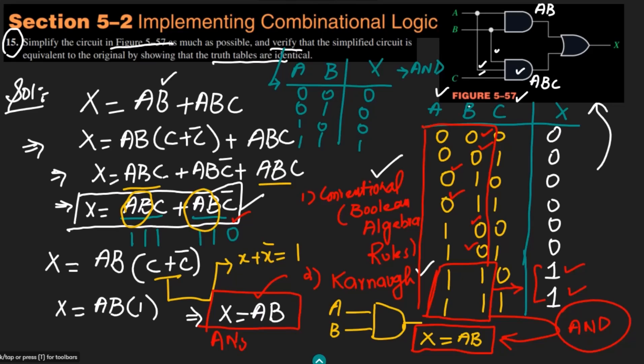It is verified that X = AB is the correct simplified output. The truth tables of the original circuit and the simplified circuit are identical. That is it for today — I have solved question 15 and will see you with more interesting questions in the upcoming video. Take care of yourself.